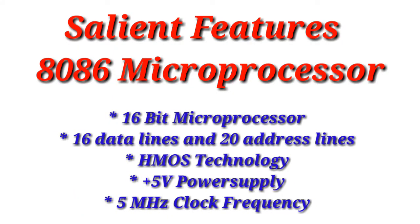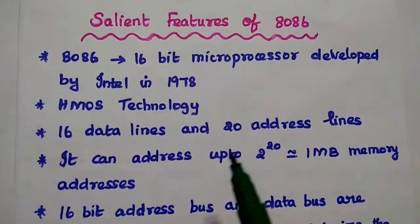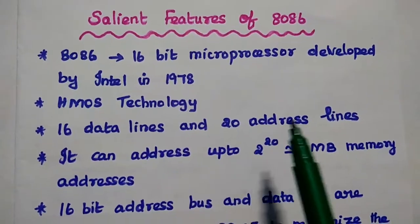Dear students, now we are going to discuss salient features of 8086 microprocessor. 8086 is a 16-bit microprocessor developed by Intel Corporation in 1978.